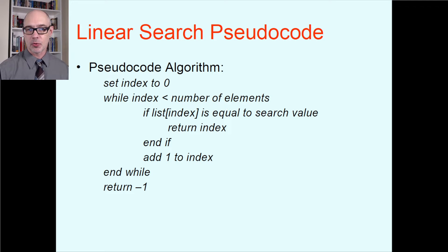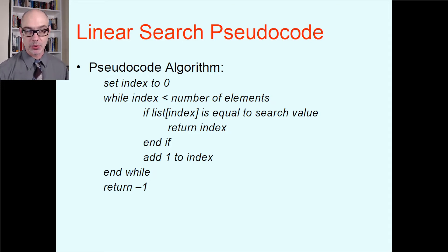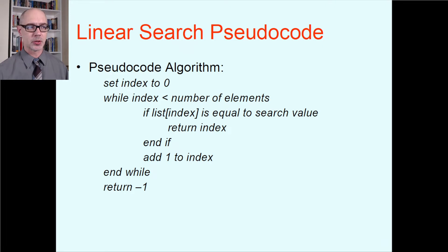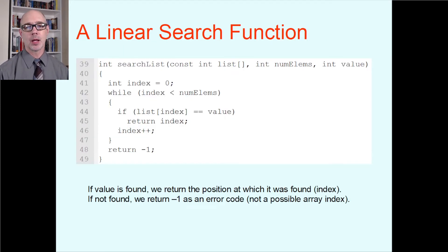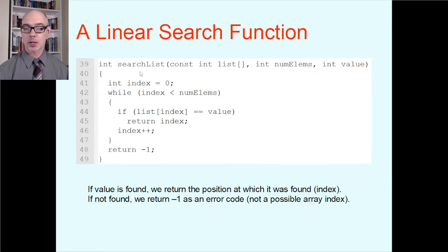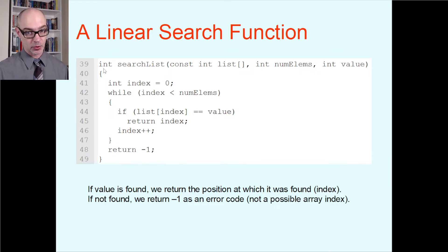Returning negative one makes sense because negative one is not a legitimate index in an array — arrays are indexed from zero on up, so negative one cannot be a valid position. That makes it a good sentinel value to signal this special condition where the thing you're looking for isn't there. Now we can translate this algorithm to C++. Here is what it looks like in the Gaddis C++ book. This function is called searchList; it returns an integer — that's going to be the index where you found it, or negative one if not found.